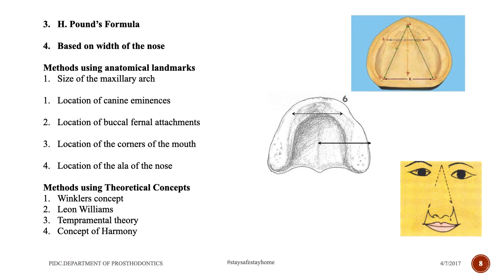Corners of the mouth: place the occlusal rims in the patient's mouth, mark the corners of the mouth on the rims, and measure along the occlusal rim — this gives the combined width of the upper anteriors. Location of the ala of the nose: draw a line from the center of the eyebrow through the ala of the nose continuing to the corner of the mouth; the two lines give the size of the anterior teeth.